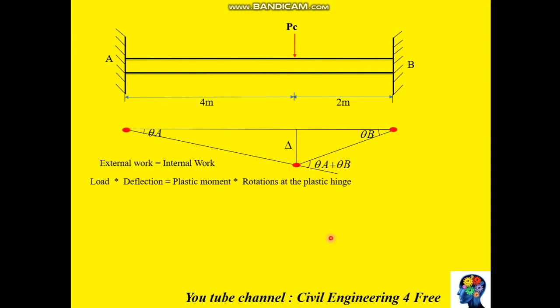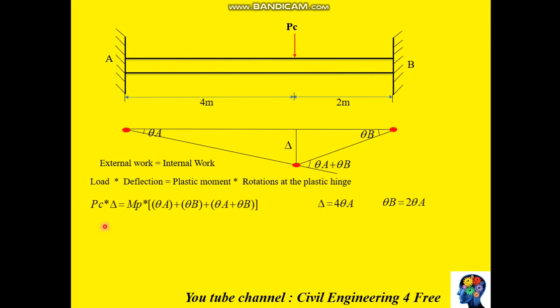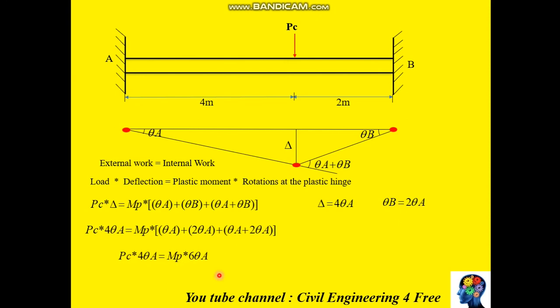Finally, we have to equate external work to internal work — external work on the left side, internal work on the right side. You can express the deflection in terms of rotation: delta equals 4 times theta a, and theta b equals 2 times theta a. The only unknowns are the collapsible load and the plastic moment. Expressing one in terms of the other, the plastic moment equals 0.667 multiplied by the collapsible load.